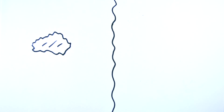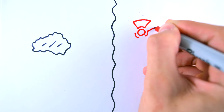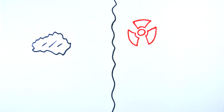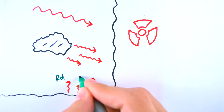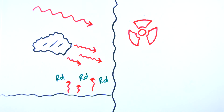Background radiation is all around us. Some of it comes from natural sources and some of it comes from artificial sources. Natural sources include cosmic rays, radiation from rocks and soil released by the radon gas, and the living things that absorb the radioactive materials and pass it up the food chain.